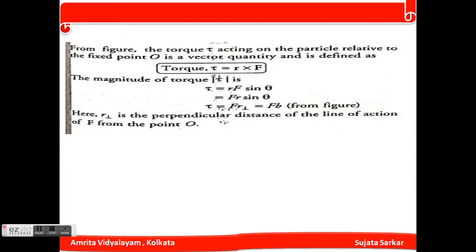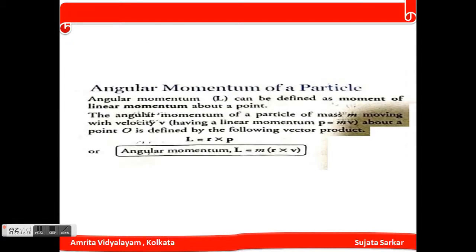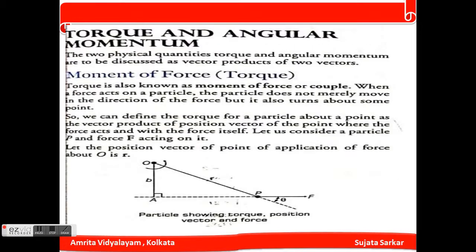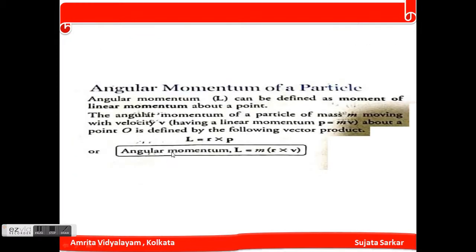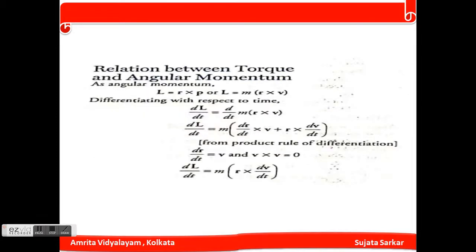Angular momentum of a particle can be defined as the moment of linear momentum about a point. Suppose a mass m is moving with velocity v, so the linear momentum is p equals mv. Angular momentum about point O is defined by the vector product: angular momentum L equals r cross p. Since p equals mv, we can write L equals m(r cross v).